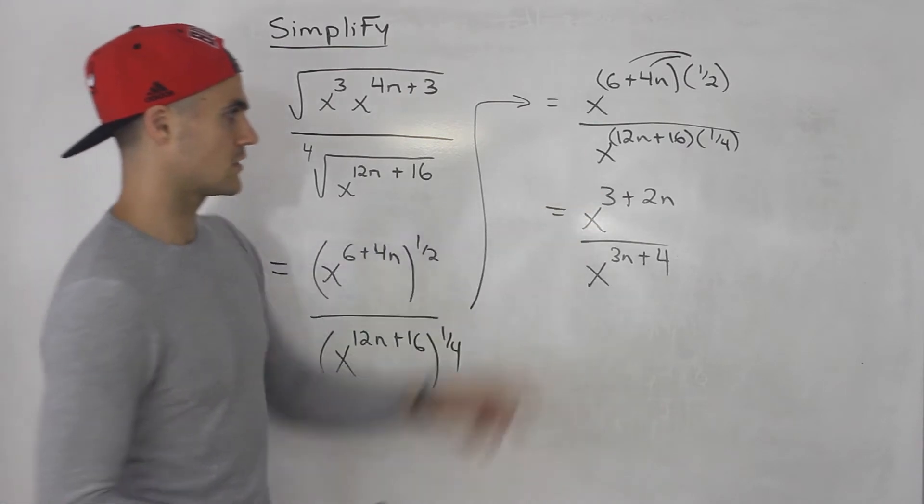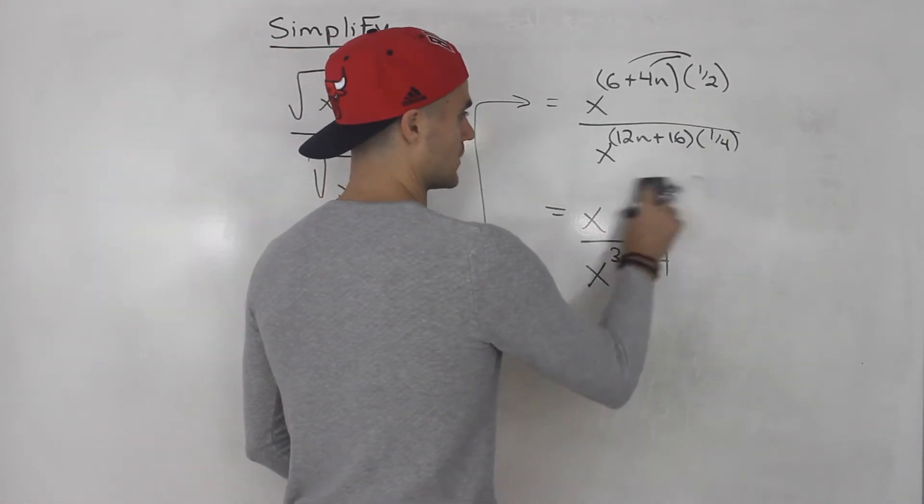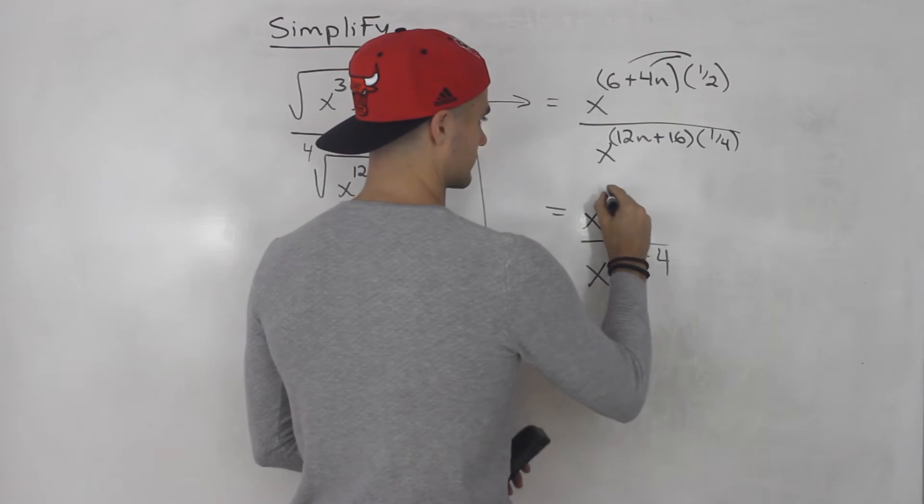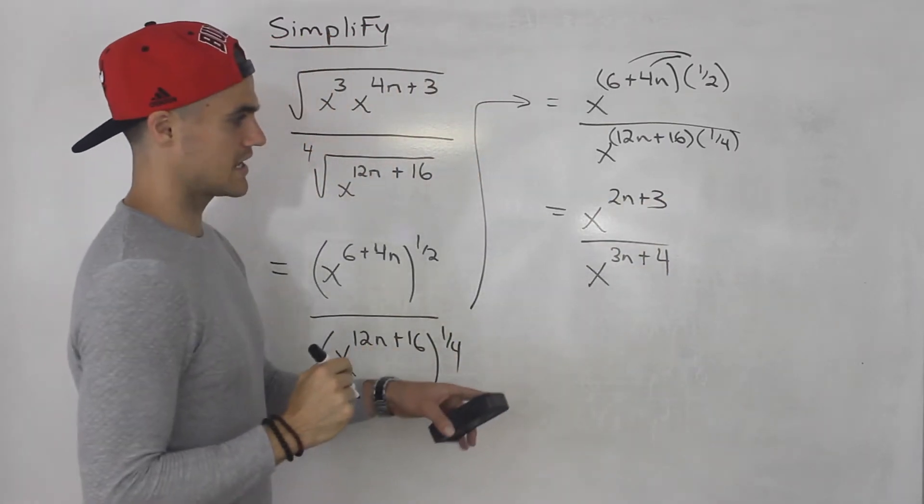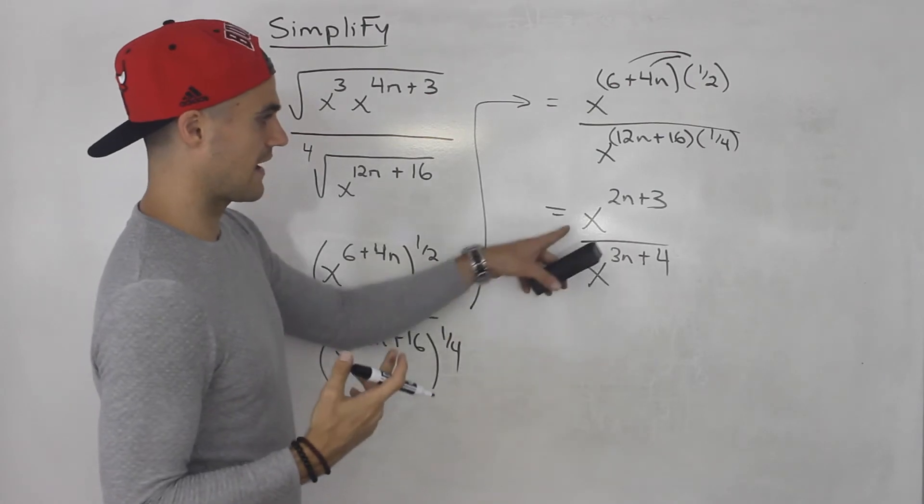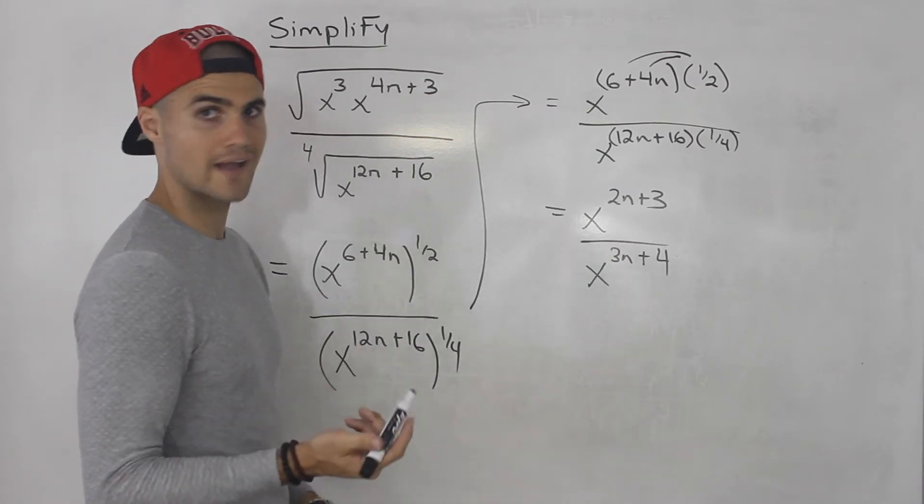Now instead of writing 3 plus 2n, I'm going to make it in line with this. So I'm going to write 2n plus 3. And notice here, we are taking exponents and dividing them, and they have the same base. So we could just subtract the exponents.